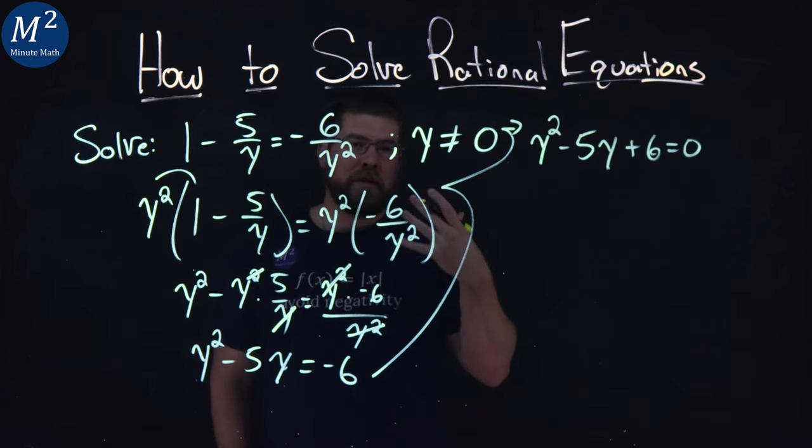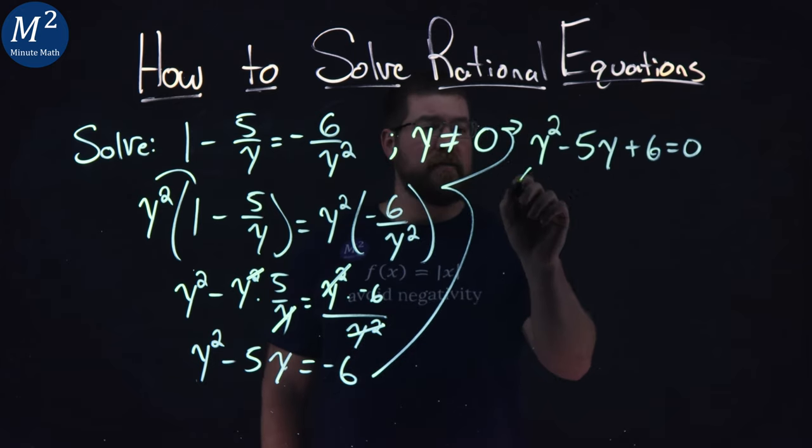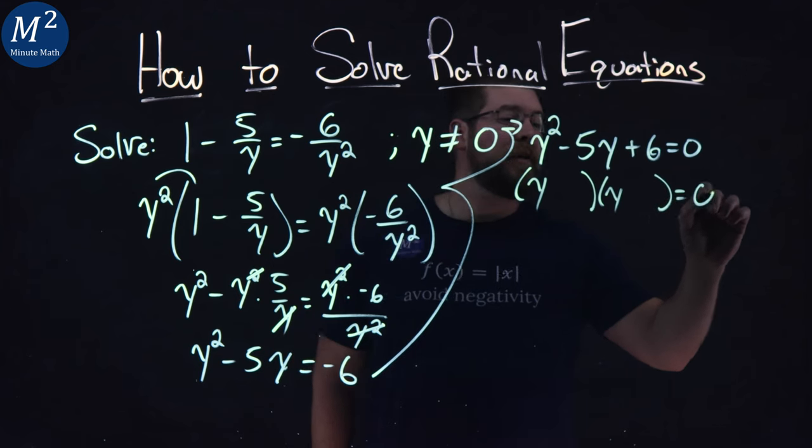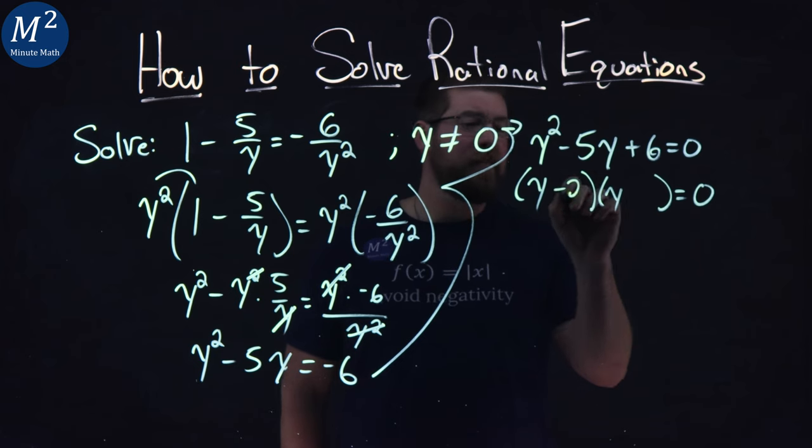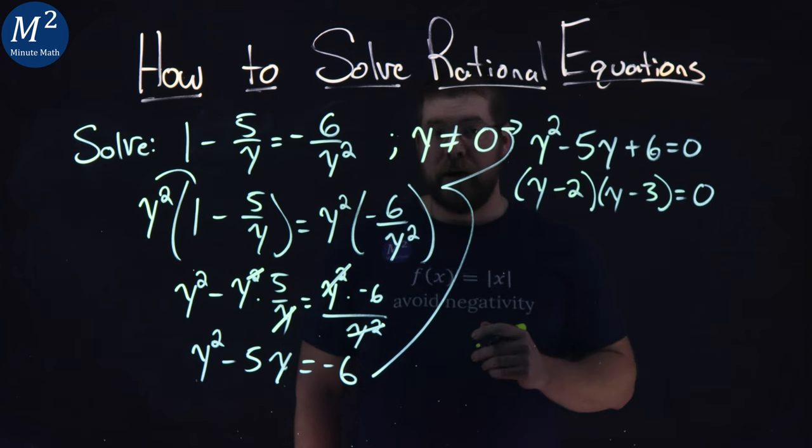And now we can solve it any way we want. We can use the quadratic formula, but I'm going to use factoring here. Because once you've got the basics of factoring down, I do think it's faster. I want two numbers multiplied by 6 but add to be negative 5, and that's minus 2 and minus 3. Negative 2 times negative 3 is positive 6, but they add to be negative 5.